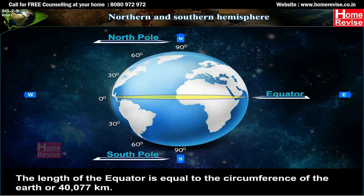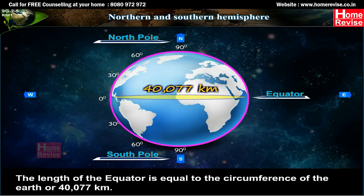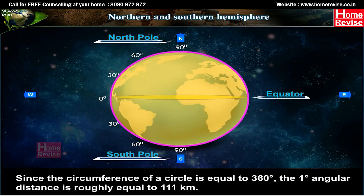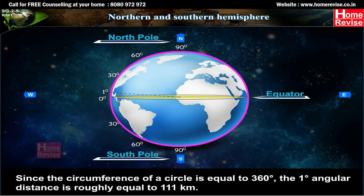The length of the equator is equal to the circumference of the earth, approximately 40,077 km. Since the circumference of a circle equals 360 degrees, one degree of angular distance is roughly equal to 111 km.